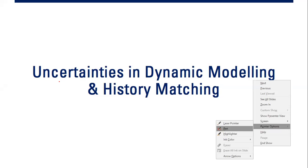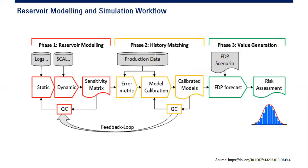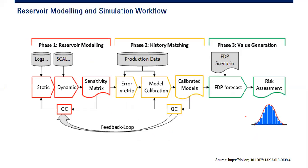After initialization, we are ready to do the calculation, the computation, the simulation. But first we need to consider uncertainty again — uncertainty in dynamic modeling plus history matching. This is the workflow: after obtaining the reservoir model, the static model, and then the dynamic model, we do sensitivity or quality control.